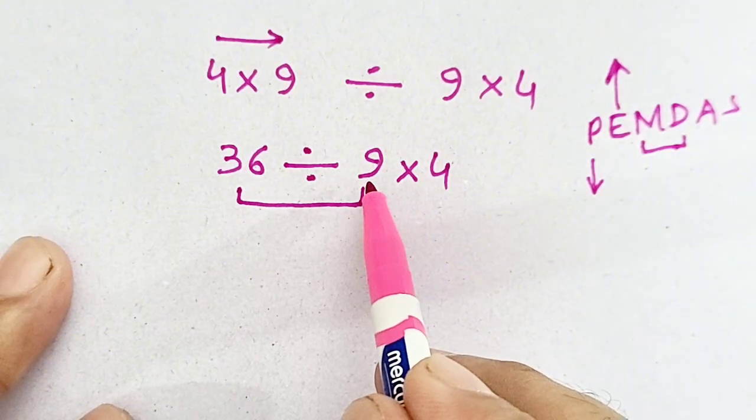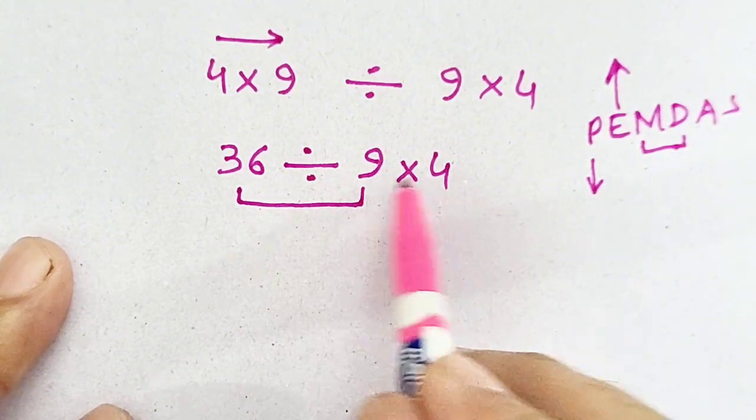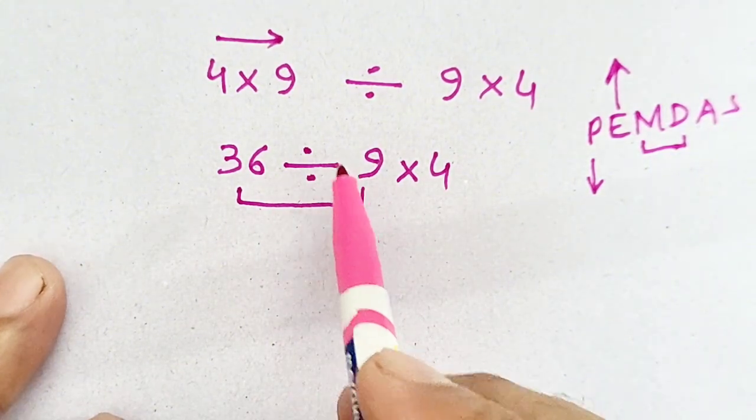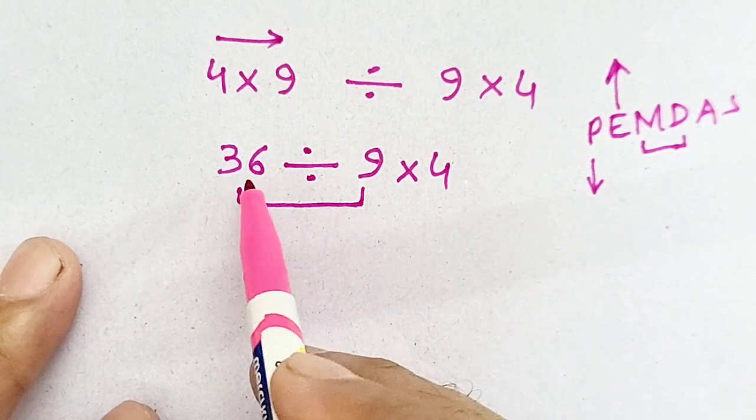36 divided by 9 will be solved first. Otherwise, 9 times 4 is 36, so the answer will be again 1, which is wrong.